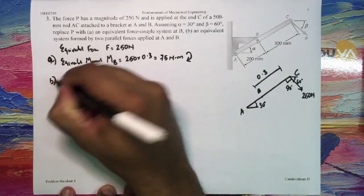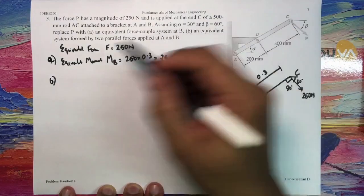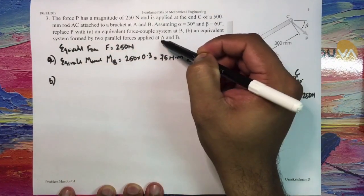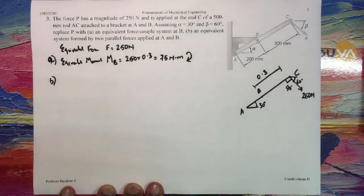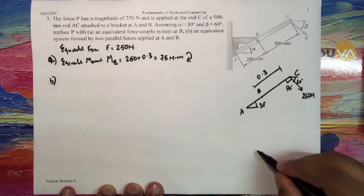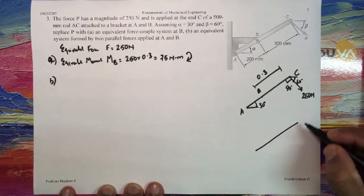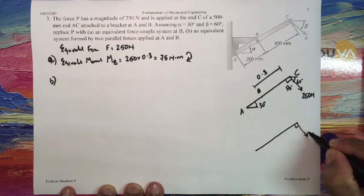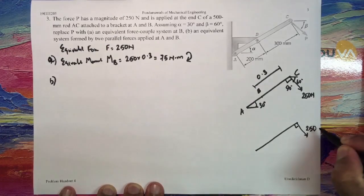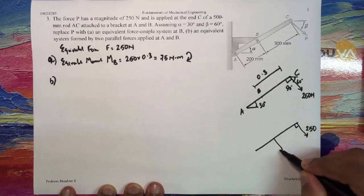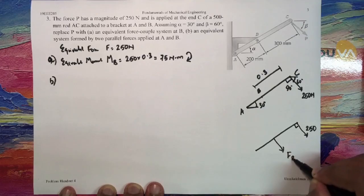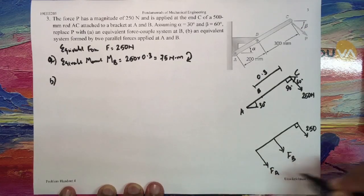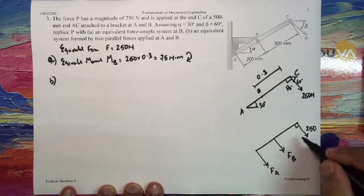Now going to part (b). Part (b) says an equivalent system formed by two parallel forces applied at A and B. So let us assume, again I'm just drawing the free body diagram here. This is 90 degrees, 250 Newtons.